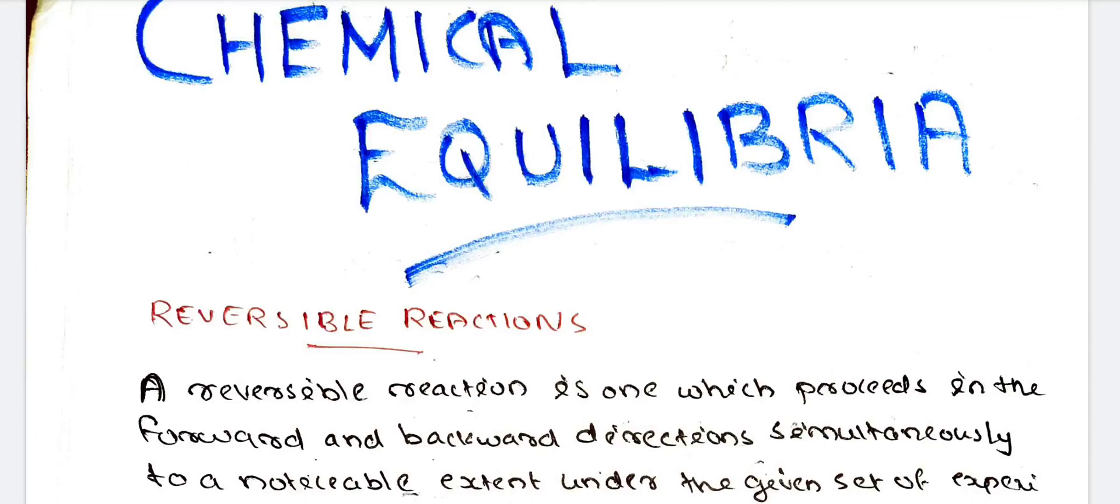In our video, we are discussing Calcutta University 3rd semester chemistry line. Chemical Equilibrium is available in our text.